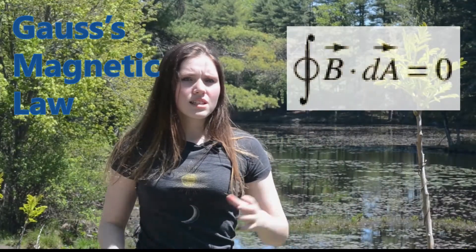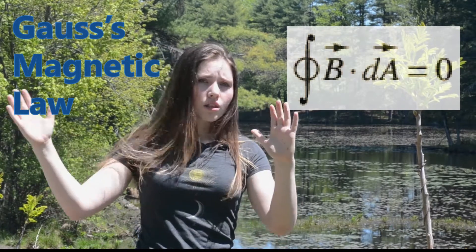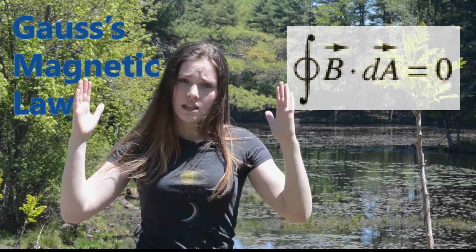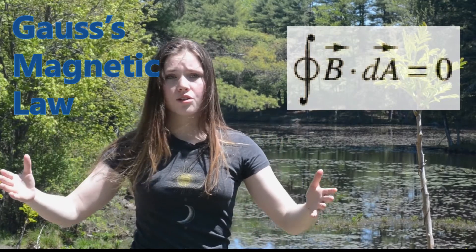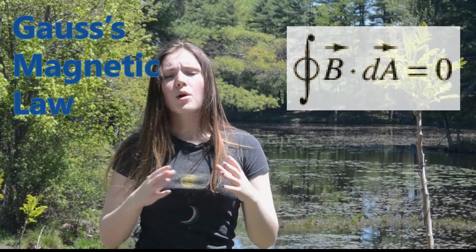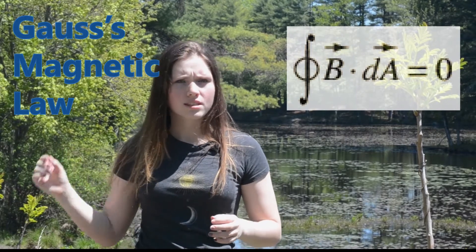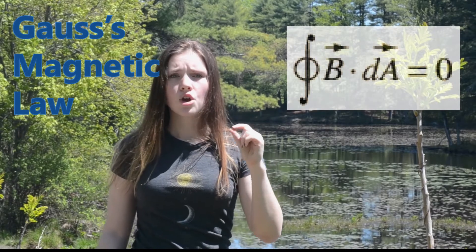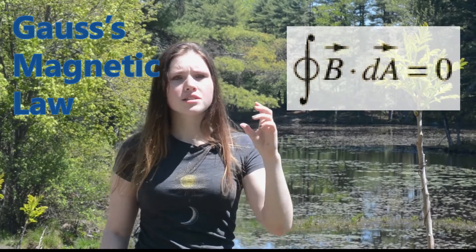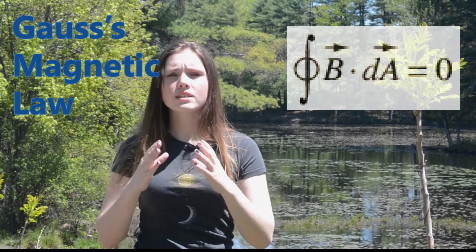Gauss's Law of Magnetism tells us that if we have a magnetic field and we take all of the vector field lines from across that magnetic field and we take the integral — or add them together — we're going to get zero. This is because magnetic monopoles don't exist. While it's okay to have just one electron in a field, you can't have just a south or just a north in a magnetic field. They are always together, and so they always cancel out.